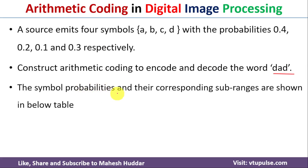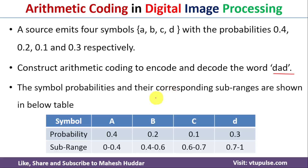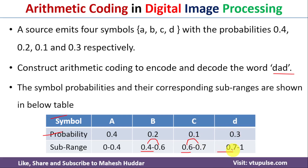The symbol probabilities and their corresponding sub-ranges are shown below. These are the symbols and associated probabilities. We need to find the sub-range for each symbol. The sub-range for A is 0 to 0.4, for B is 0.4 to 0.6, for C is 0.6 to 0.7, and for D is 0.7 to 1.